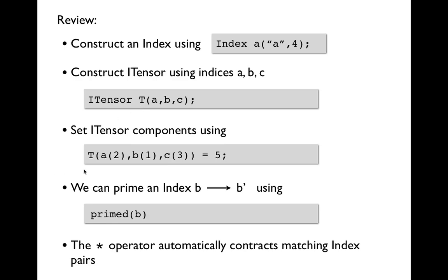Then we can set the components of an itensor by temporarily setting copies of our indices to various values. Here we set a to its second value, b to its first, c to its third. Again, c of three just makes a temporary object that represents the third setting of c. It doesn't leave c set to three, it's just a temporary thing. Plugging these into T, we access the 2,1,3 component of T and we can set that to five.